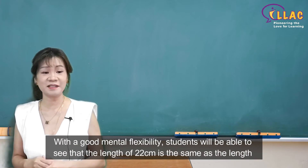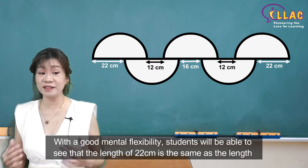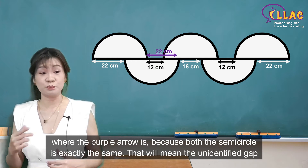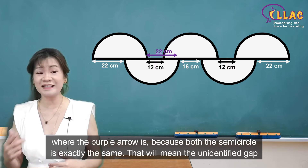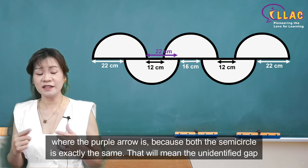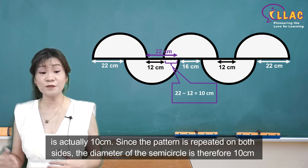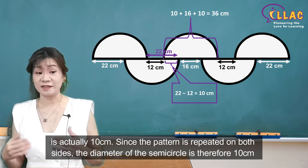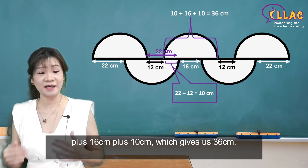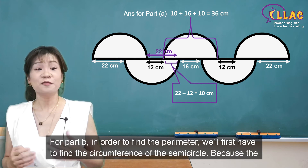With good mental flexibility, students will be able to see that the length of 22 cm is the same as the length where the purple arrow is. Because both semicircles are exactly the same, that means the unidentified gap is actually 10 cm. Since the pattern is repeated on both sides, the diameter of the semicircle is therefore 10 cm plus 16 cm plus 10 cm, which gives us 36 cm.